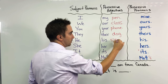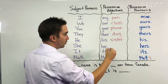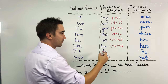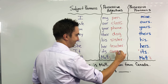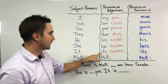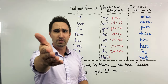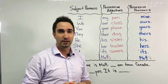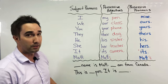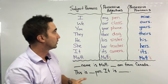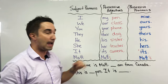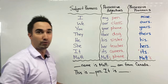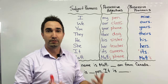His sister, her teacher, its camera. We use 'its' to talk about a thing. So my phone — I can say its camera is recording now. It's also my phone, it's my phone, and my name is Matt. So we can also say it's Matt's phone.